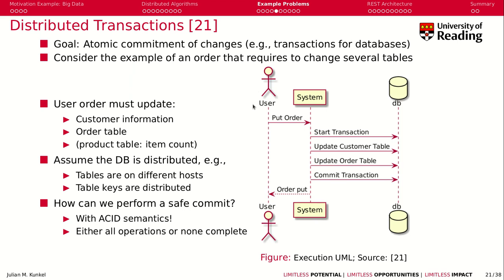Think of a distributed database where a customer wants to make an order. You have a front-end system where the user puts in the order, then you start a transaction with your distributed database — part of the tables placed on different hosts. You may want to update a customer table noting that an order has been placed, update the order table, and internally update the item table to reduce the number of available items by one. Then you commit the transaction.